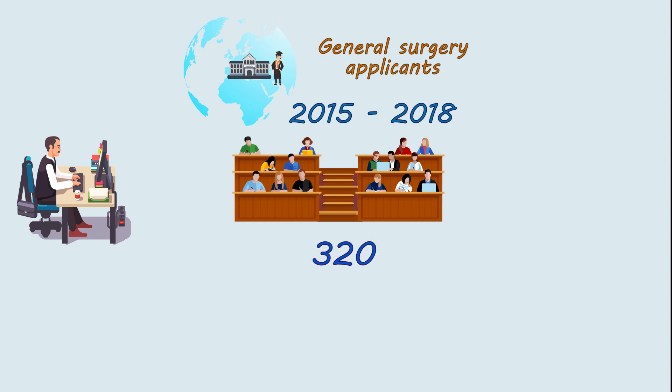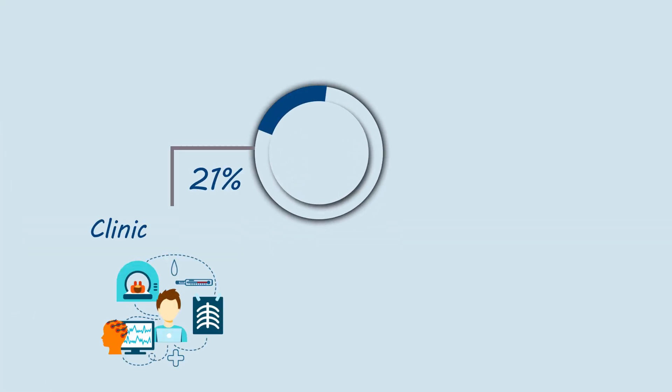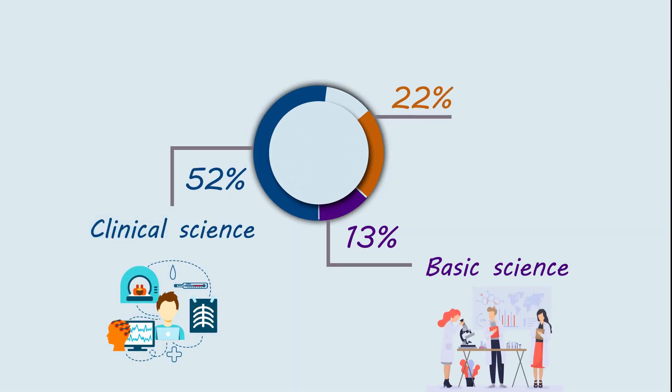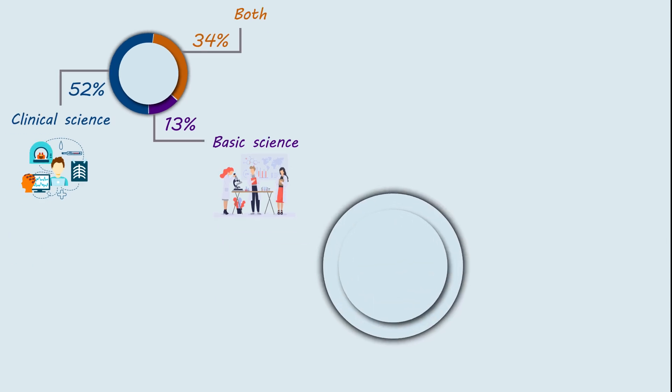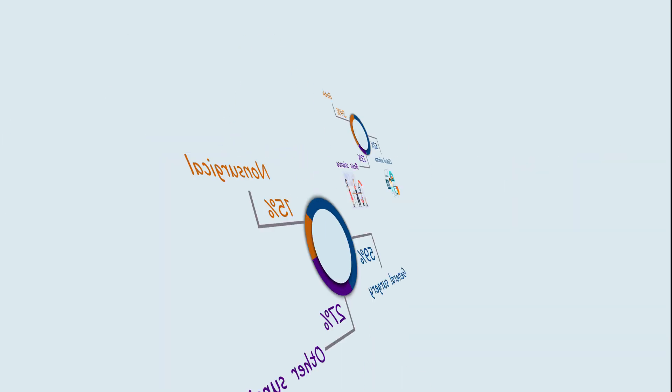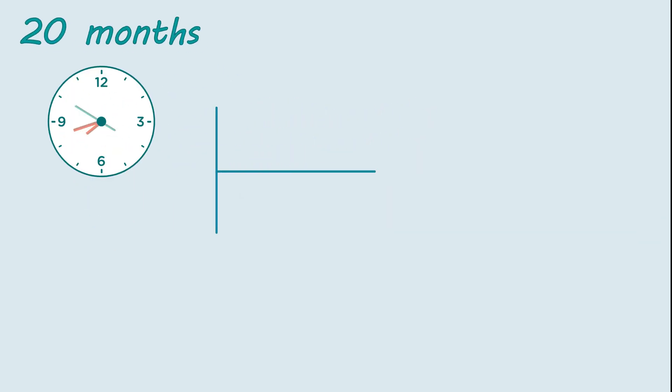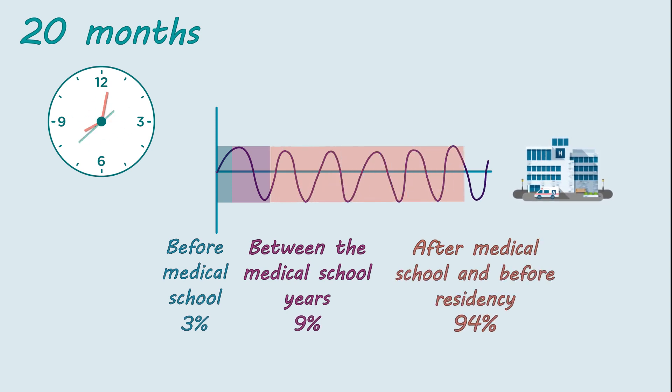A total of 320 applicants completed the survey, of whom 46% spent dedicated research time in the US prior to residency. The majority of respondents spent research in clinical science and did research in general surgery or other surgical specialties. The median time spent was 20 months, with the majority being after medical school and before residency.